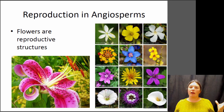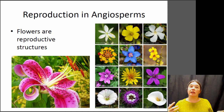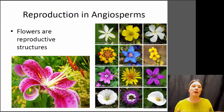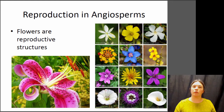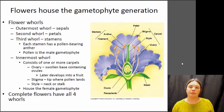Flowers of course come in a wide variety of shapes and sizes, but they're all doing the same basic function, which is that they're producing the male and female gametophytes. We talked about those in the alternation of generations lecture, and those gametophytes are going to produce the sperm and eggs, which will then fuse to form a new plant. So let's start by looking at the structure of a flower.